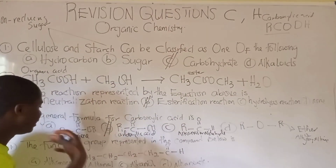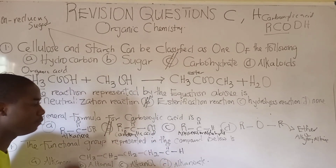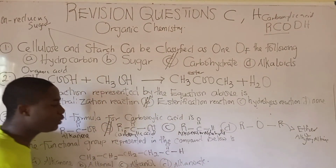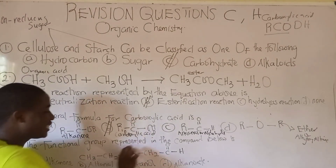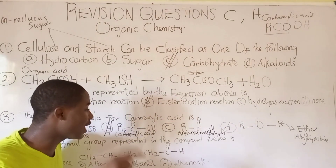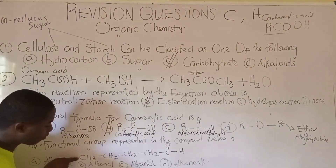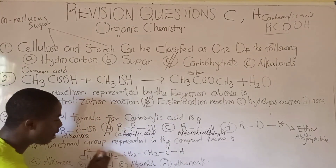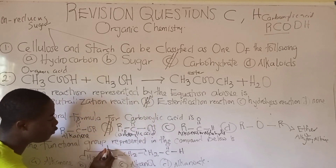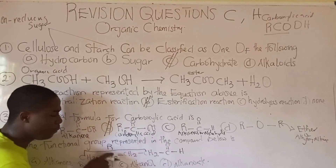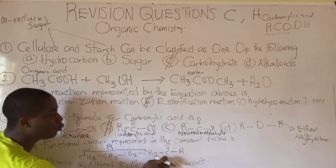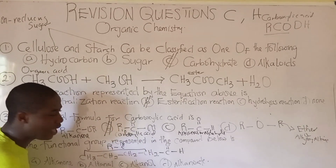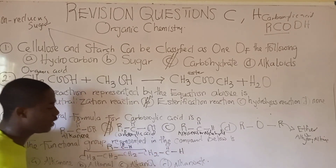Looking at question 4: the functional group represented in the compound below is — they are asking which group this compound represents. The group from carbon to carbon represents an alkyl group, given the symbol R. This alkyl group is bonding to carbon, which bonds to oxygen and to hydrogen.